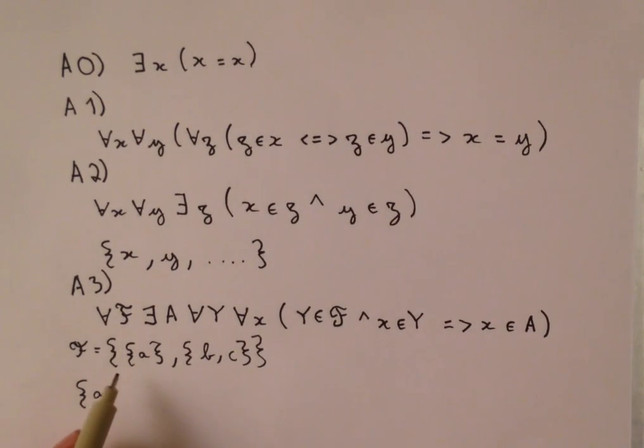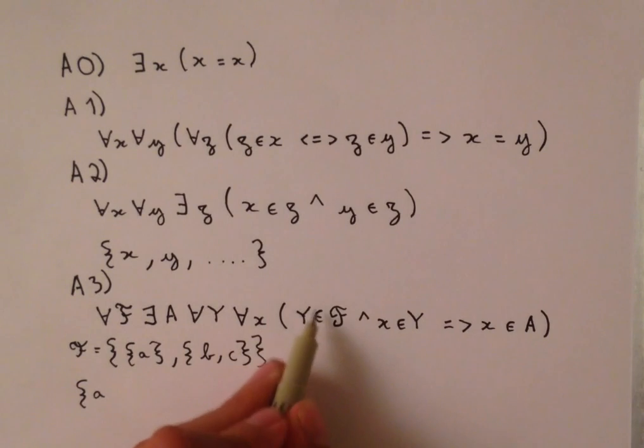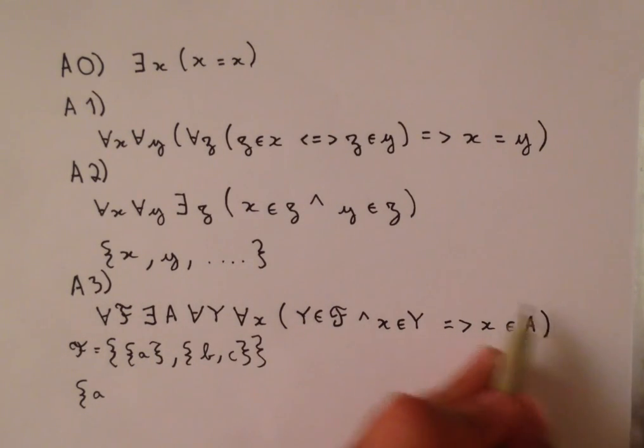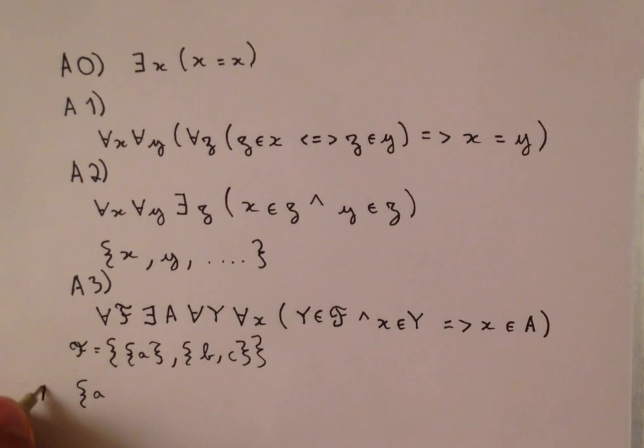because this set contains the set containing a which is our big y, and that set, that big y, contains a which is our little x, and so x is going to be in our big a. So it's going to contain a, it's going to contain b for that same reason. It's going to contain c as well.